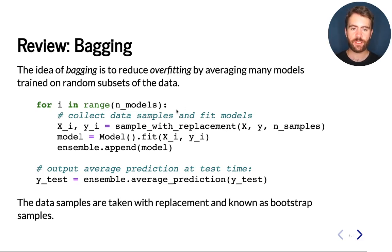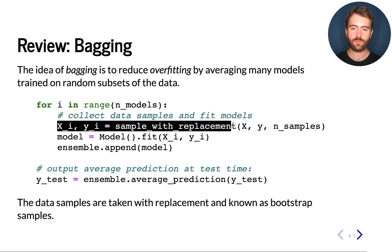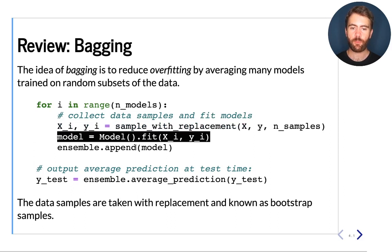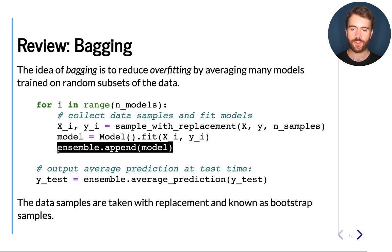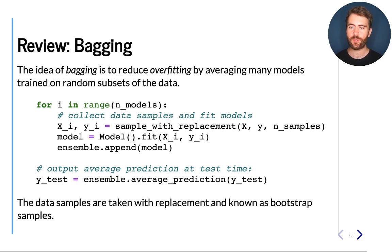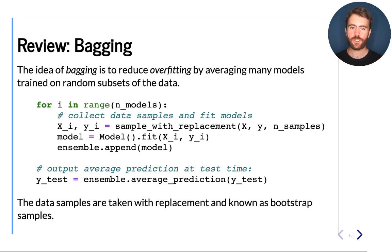In bagging, we repeatedly take random subsamples of our training set, we fit a new model on this random sample, and we add it to our total set of models. At prediction time, we output the average of all of these models. Because each of them is trained on a slightly different version of the training data, the errors they produce outside the training region tend to be different and cancel each other out — one model might predict too high, another might predict too low, but on average this produces predictions which generalize better.